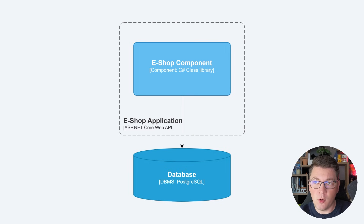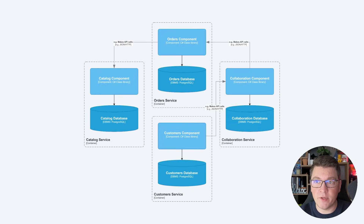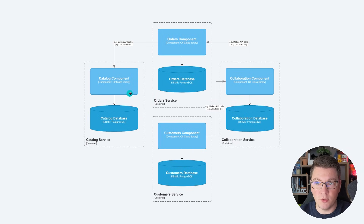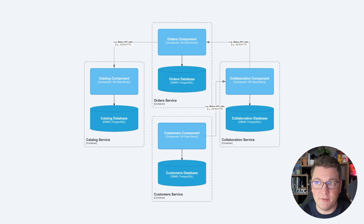If we were to decompose our monolith system into microservices, we could end up with something like this. Instead of everything being deployed together, now we have a microservices system where we have a few individual services running independently. We have our catalog service which contains the catalog component — this could be a .NET Core Web API — and it also has its own database. The same goes for the order service, collaboration service, and customer service. They are all deployed independently and communicate with each other using network calls, either a RESTful API or a gRPC service. The important thing is that this uses network requests instead of in-memory calls as was the case with a monolith.